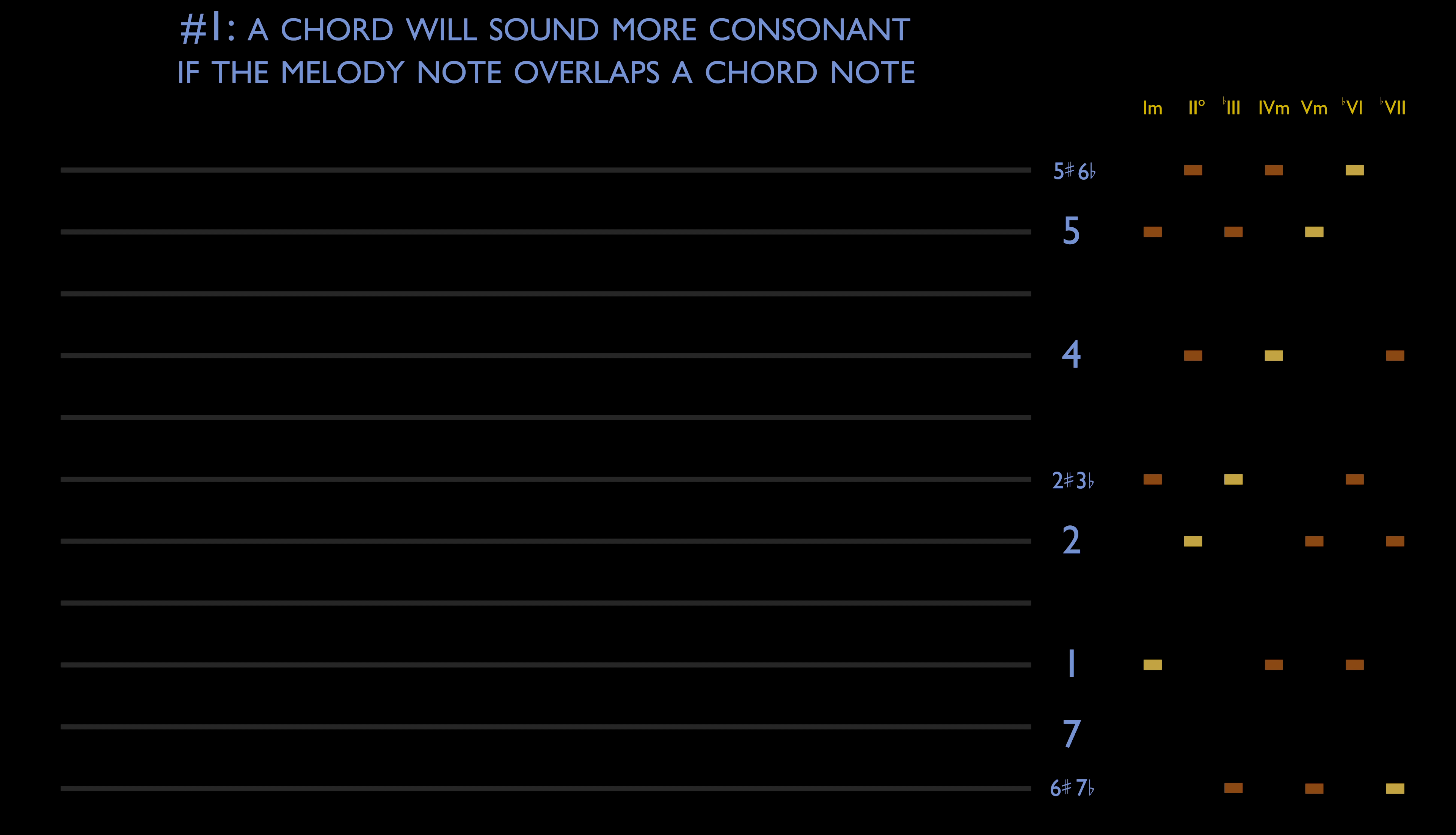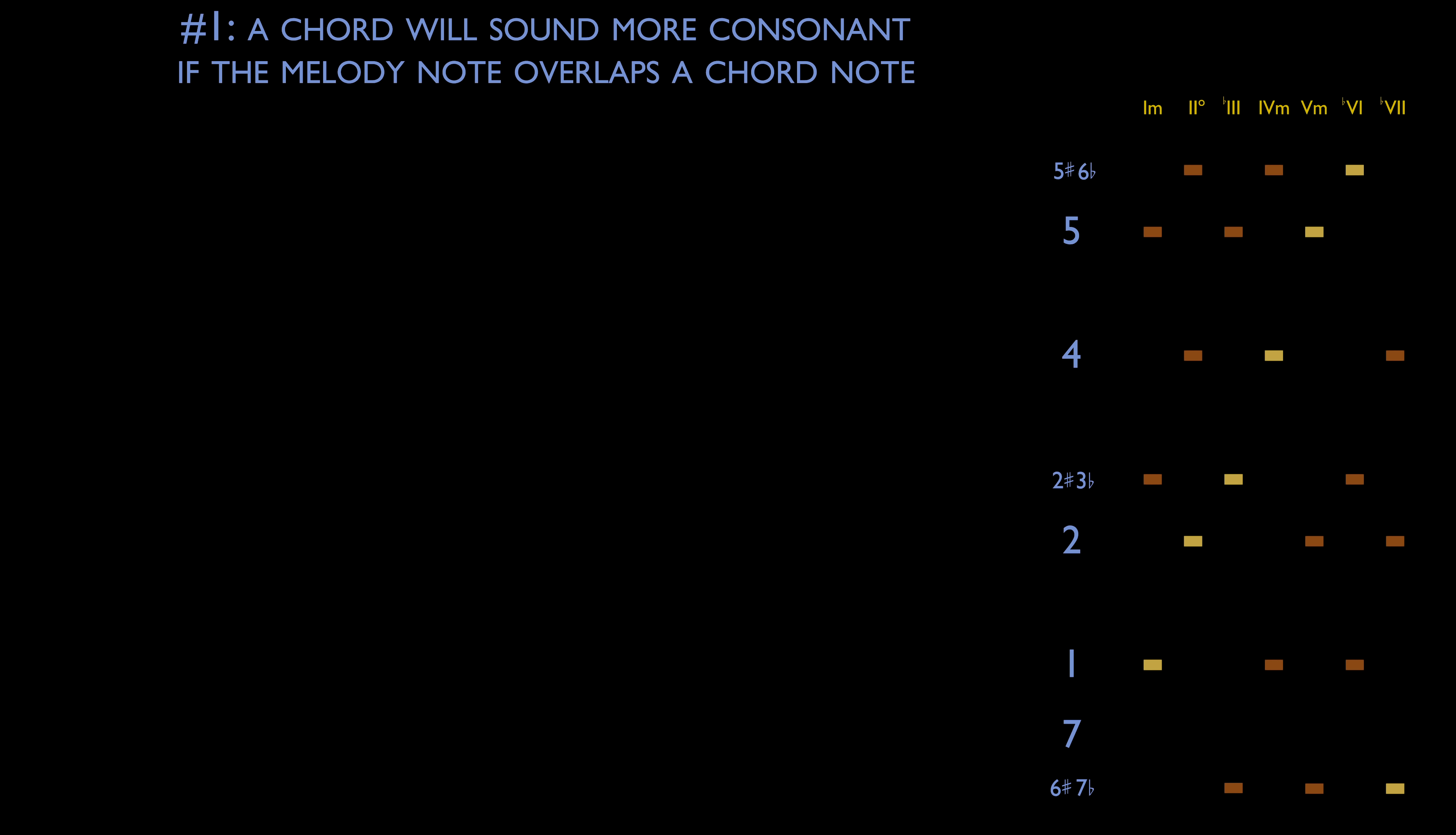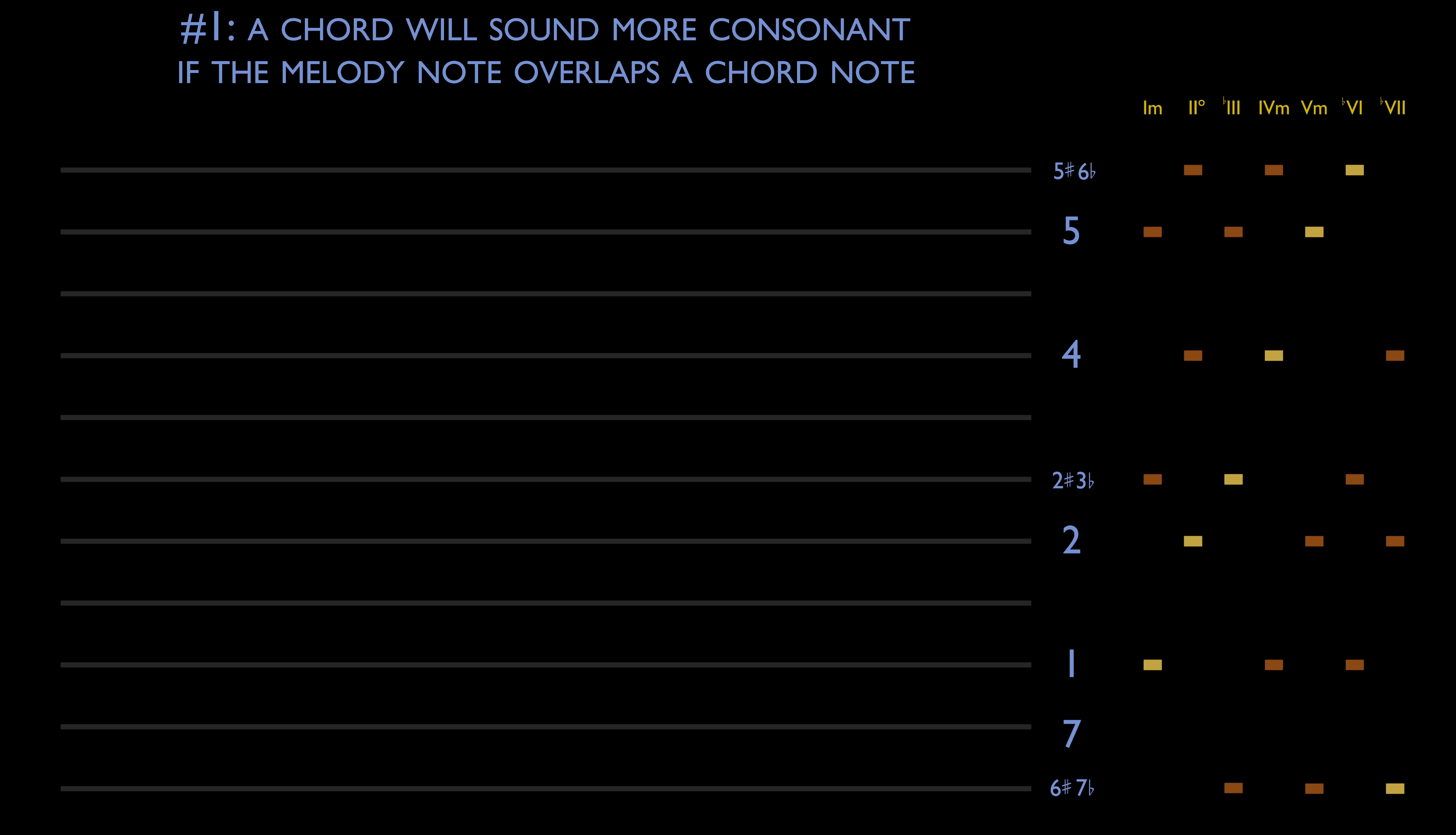General guideline number one: A chord will sound more consonant if the melody note overlaps a chord note. One way to visualize this process is to picture our melody as a little mouse trying to cross a river by jumping on logs. The logs are the notes found in the chords we choose, and they give the melody mouse a place to land as it moves along. If the mouse lands on a log, the result will sound natural to our ears. If the mouse lands somewhere without a supporting log, it will get wet, and the music will sound more unusual or challenging. As we build our progression, we will keep in mind the pile of chords we are pulling from.